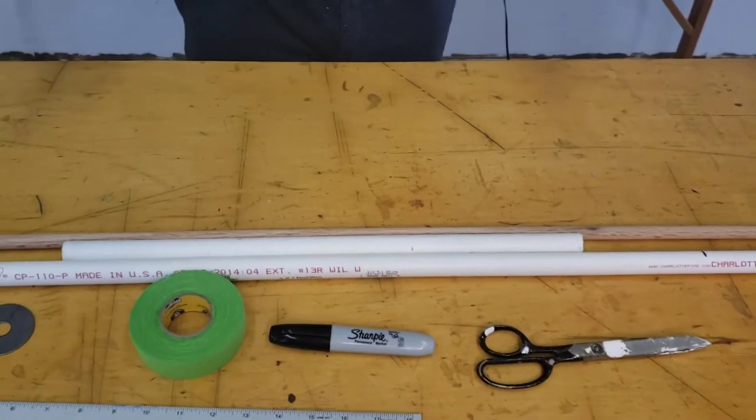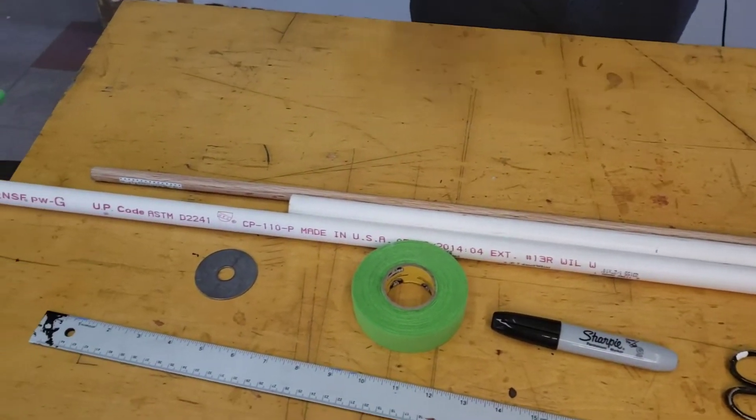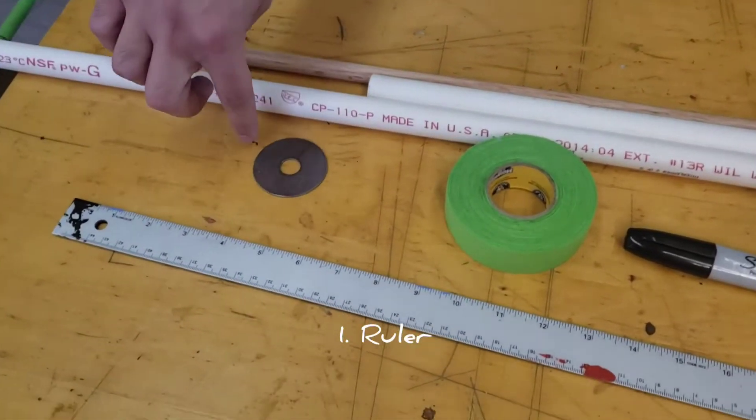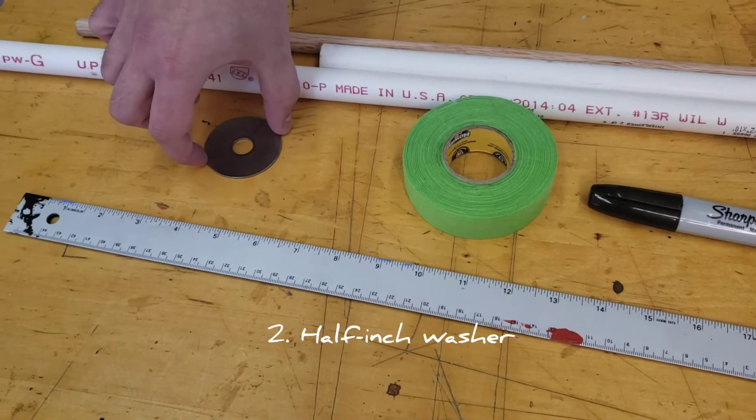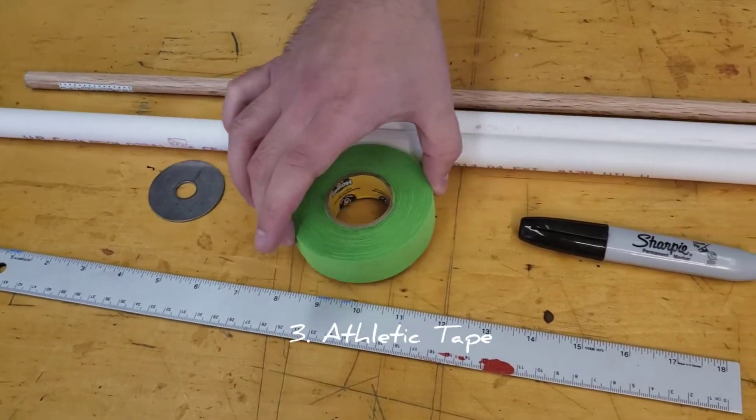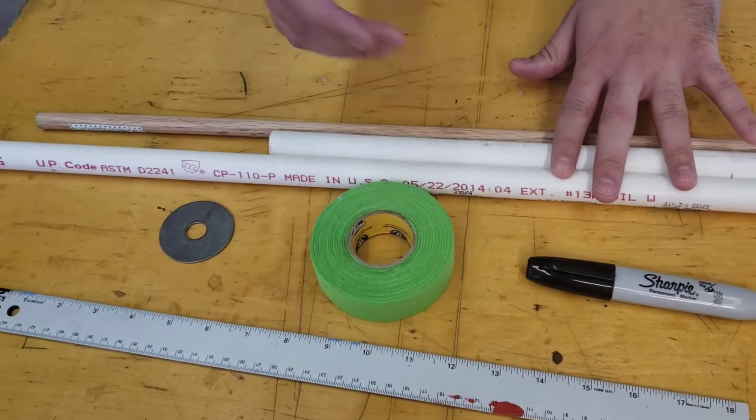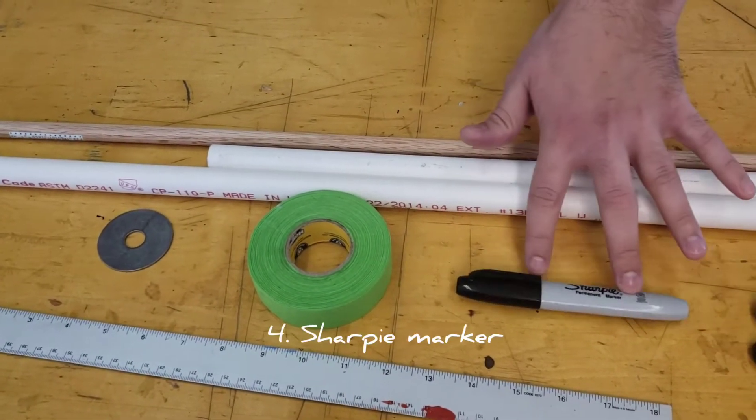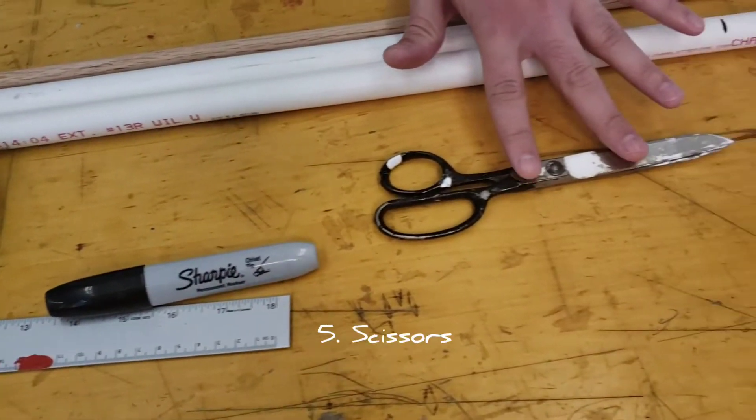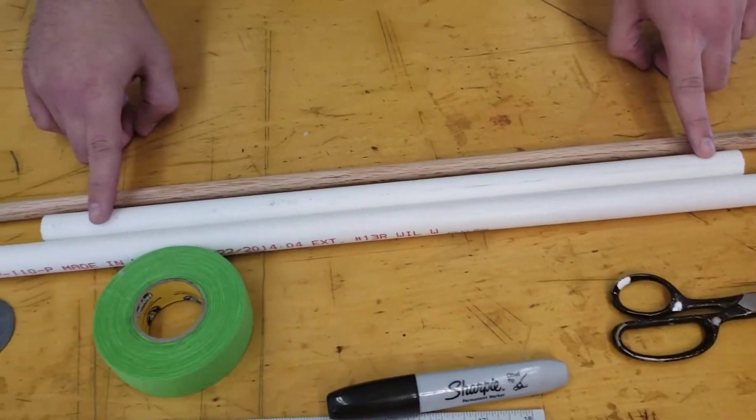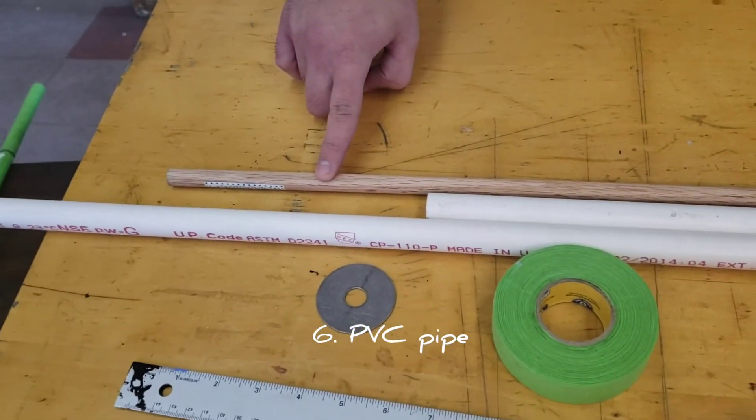The supplies we'll need in order to construct our own prop sword will be a ruler, a half-inch washer that is two inches wide, some tape. I use athletic tape that you can tape up a hockey stick or field hockey stick with, a sharpie marker, a pair of scissors, PVC piping half-inch, or a half-inch dowel rod.